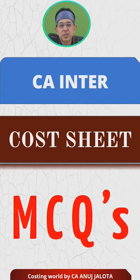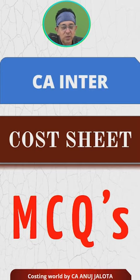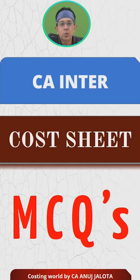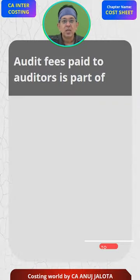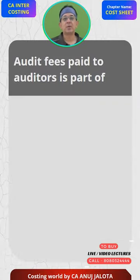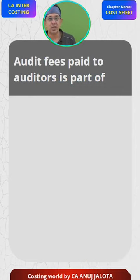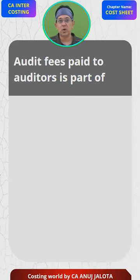We are doing CA Inter cost sheet MCQs one by one, so you will come to know what type of questions can come and you can answer them if you have done your chapters. This cost sheet MCQ is going to be quite easy for you. Audit fees paid to the auditor — so that is bread and butter for a CA.